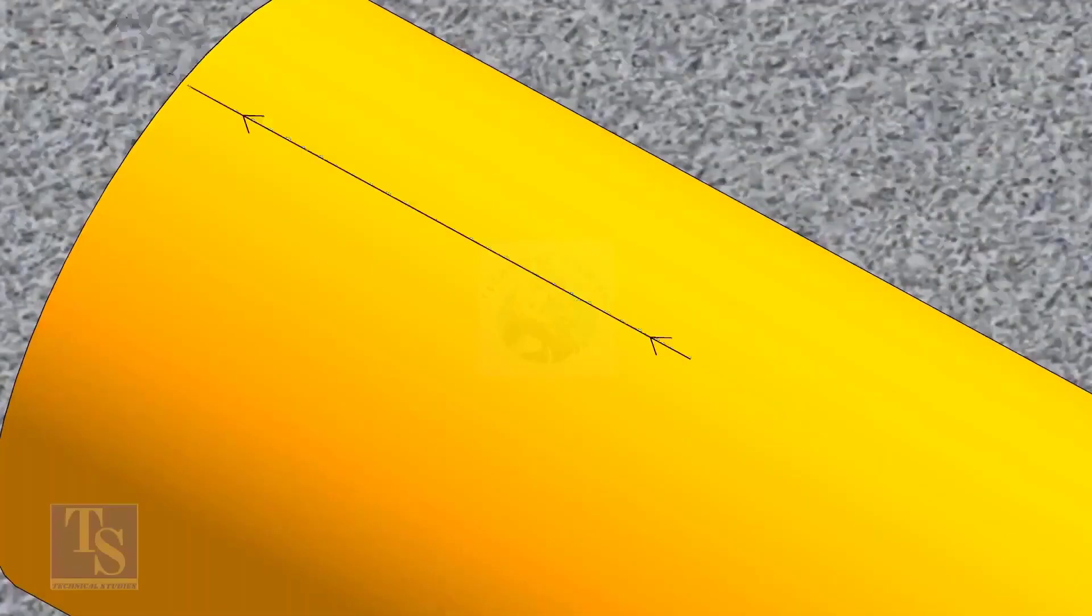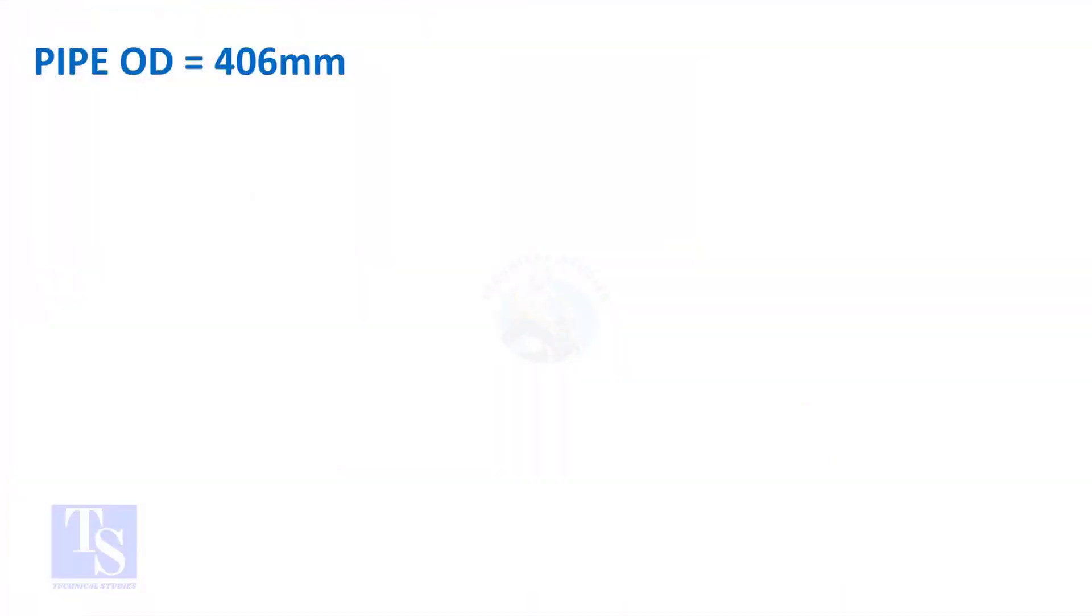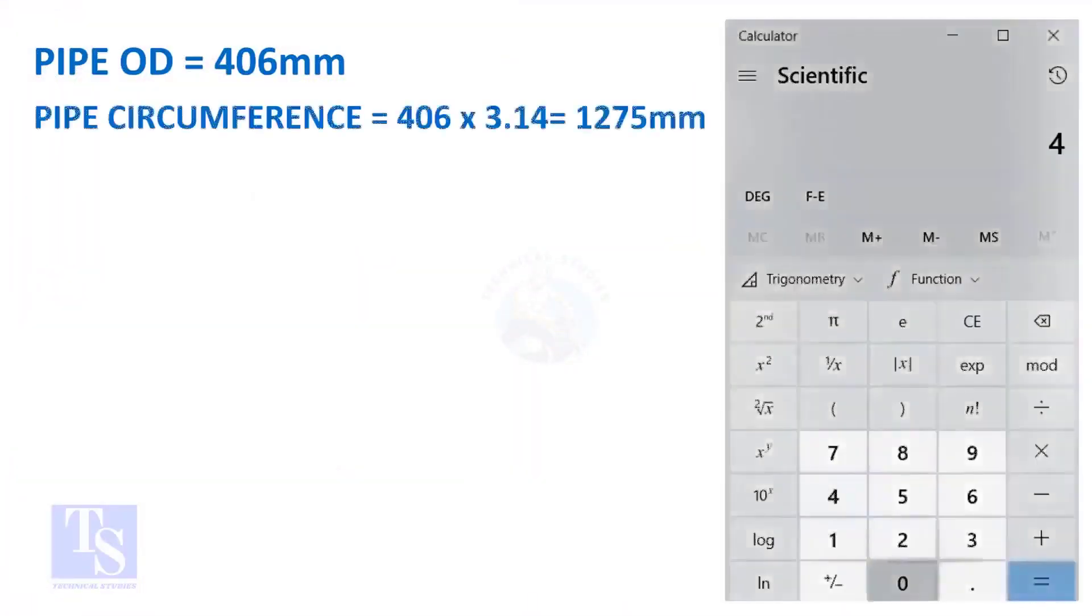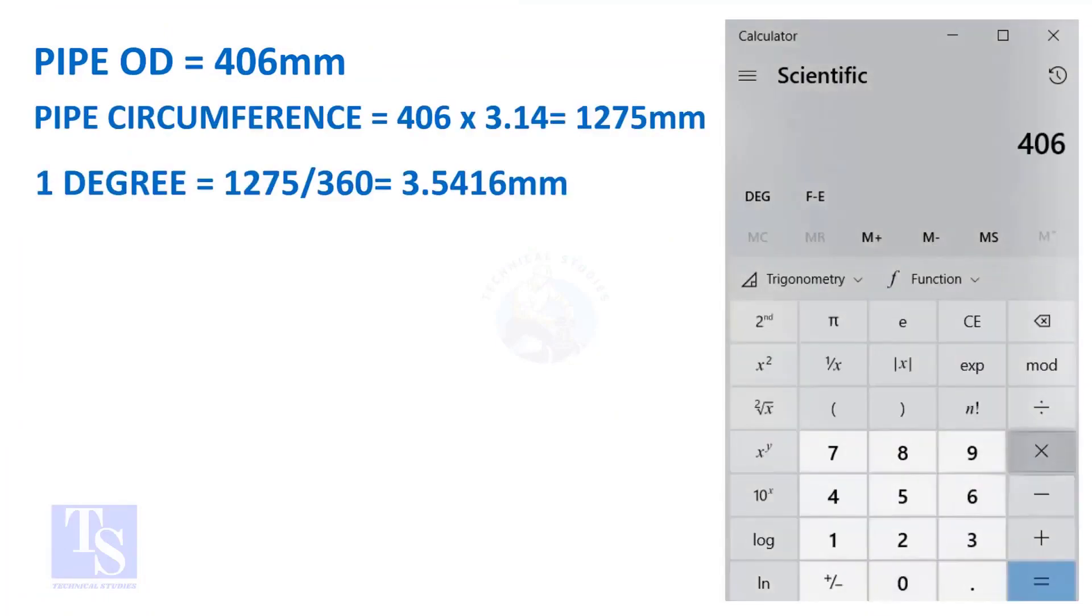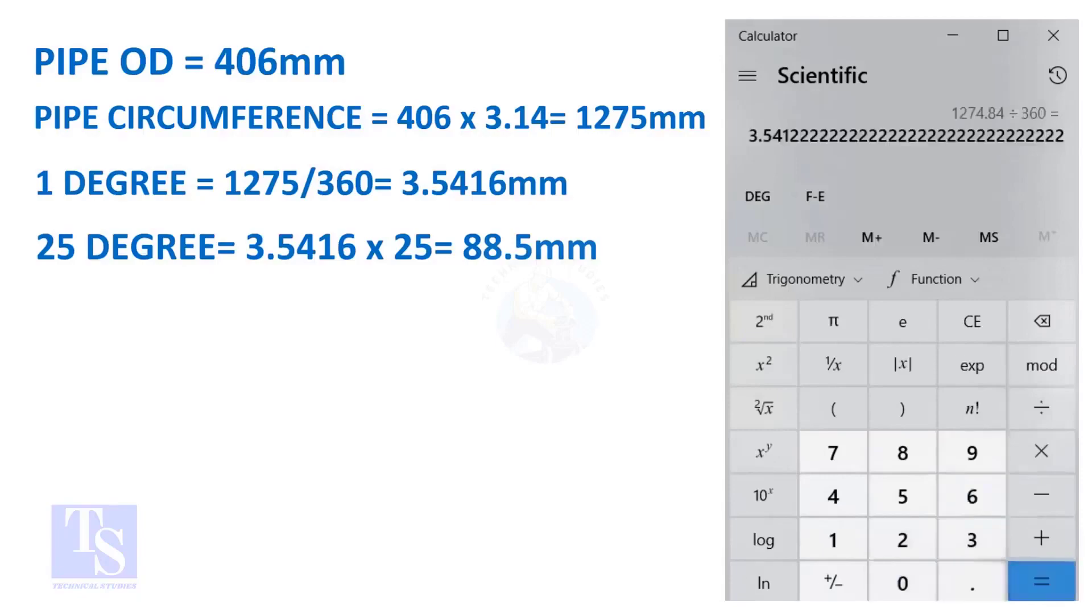Let us calculate the circumferential distance or arc length for 25 degrees. Multiply the OD by 3.14. You will get the circumference of the pipe. Divide the circumference by 360, you will get the arc length of 1 degree. And finally, multiply the 1 degree arc length by 25. Now you have the arc length of 25 degrees. You can apply this formula to get the arc length of any degree.